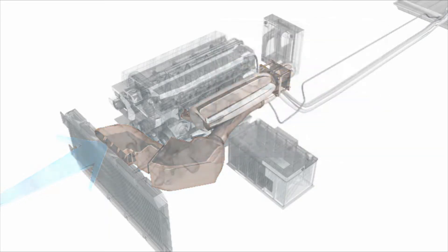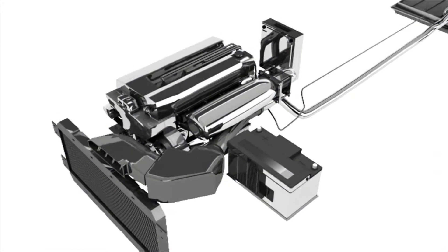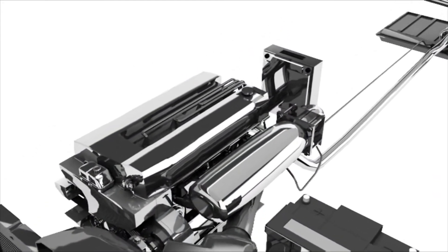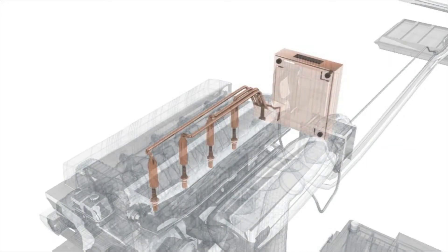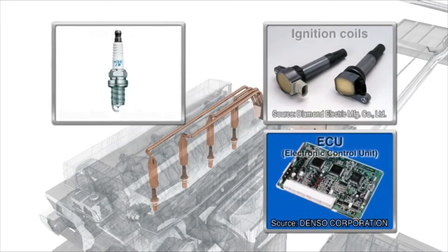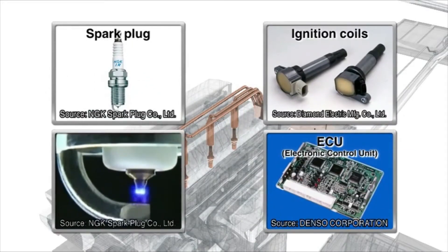In gasoline engines, the air fuel mixture is sent to the combustion chamber and ignited by the ignition system. The ECU sets the timing for the ignition coil to generate approximately 50,000 volts, sparking the spark plug.